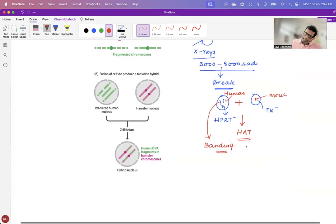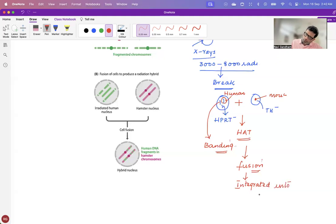When fusion takes place, one thing has to be understood, is your fragments or the broken pieces will now get integrated into the mice chromosomes, or the rodent chromosomes. That has to be clearly understood.